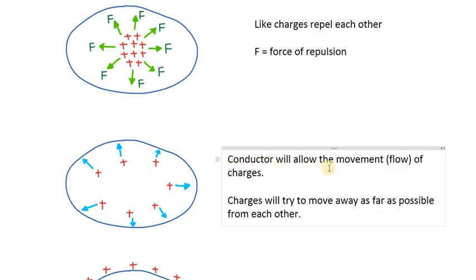The conductor will allow the movement or flow of charges because it is a well-known fact that metals are good conductors of electricity, meaning they easily allow the flow of charges. So the charge will flow. Due to repulsion, charges will begin to move far away from each other, so they will start going towards the surface.